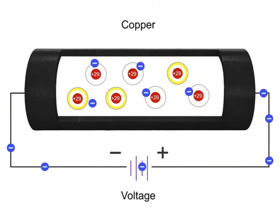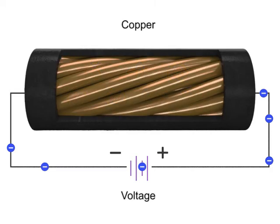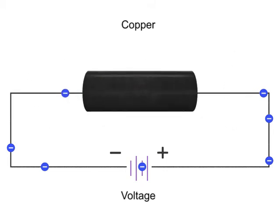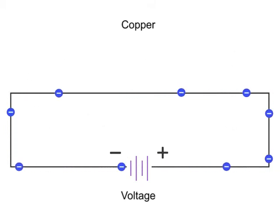Materials that have free electrons and allow electrical current to flow easily are called conductors. Conductors, such as copper, have low resistance to electrical current flow and thus are used extensively in electrical circuits.